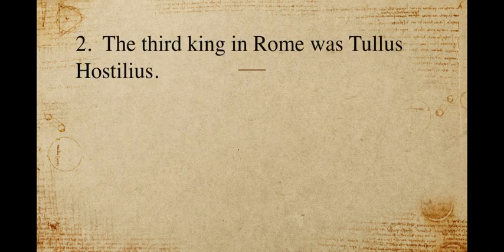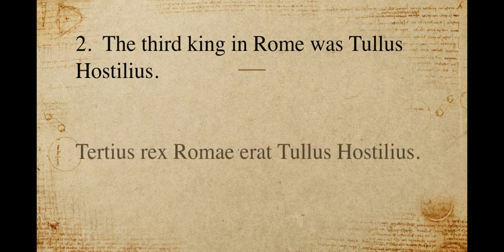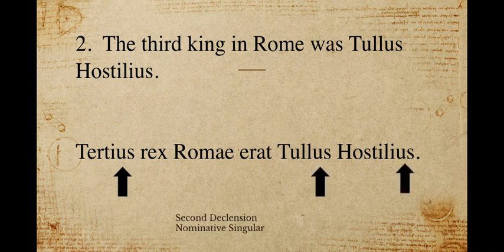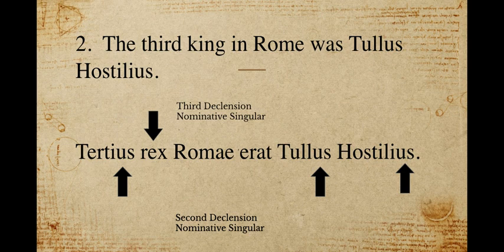Number two: 'The third king in Rome was Tullus Hostilius.' This sentence is a little special because it has the verb 'was' in it. If you use any form of the verb 'to be' — is, was, were — it takes nominative on both sides. So when we write it out it would be: 'Tertius Rex Romae erat Tullus Hostilius.' All these nouns are second declension nominative singular, so they end in -us. Rex is a little different because it's a third declension noun in nominative singular. Romae, since you've been doing Duolingo, just means 'at Rome,' so we're not going to worry about that right now.